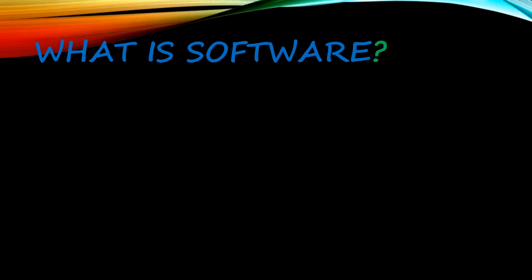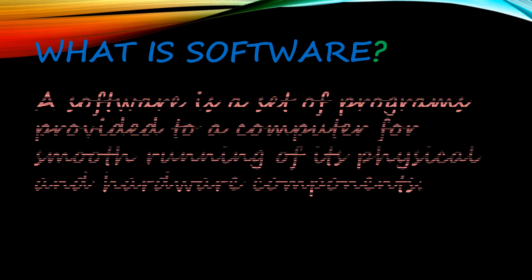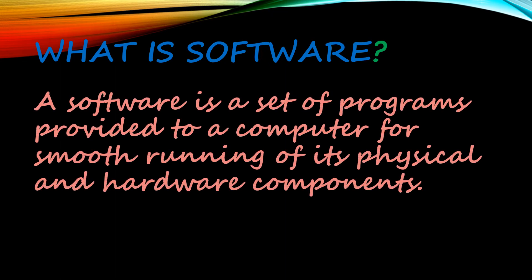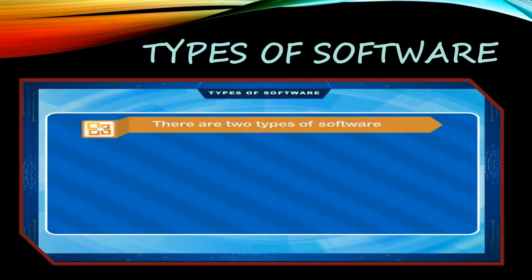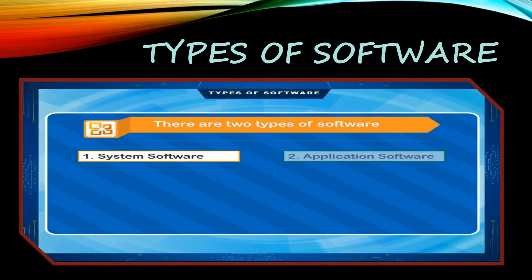So now we can define software. A software is a set of programs provided to a computer for smooth running of its physical and hardware components. There are two types of software: system software and application software.